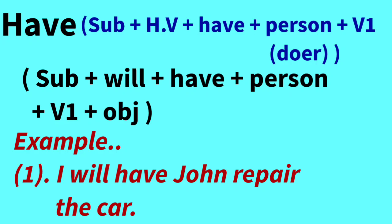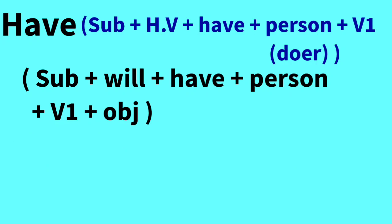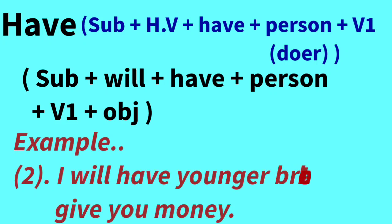The second example is: 'I will have my younger brother give you money.' The meaning is: I will get money given to you by my younger brother. The work of giving money — the duty — is assigned to my younger brother. According to the structure: Subject is 'I,' then 'will,' then 'have,' then 'younger brother' as the person or doer, and 'give you money' as the first form of the verb.